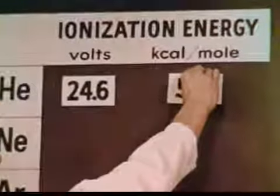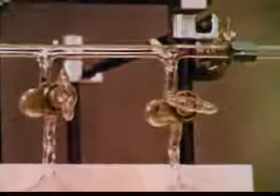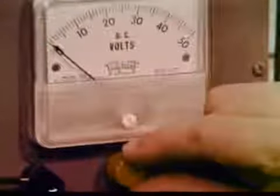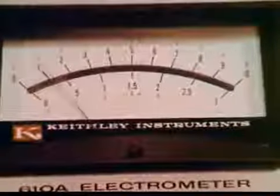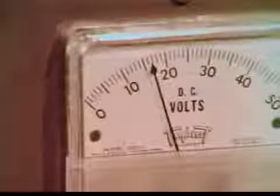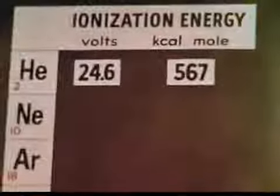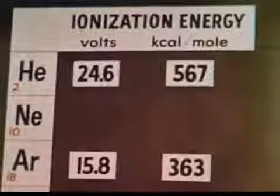The accepted value of 24.6 volts gives an ionization energy of 567 kilocalories per mole for helium. Now let's take the next gas, argon. The helium has been pumped out of the cell and argon added. Ionization begins at a reading of about 16.5 volts. The accepted value is 15.8 volts, which corresponds to 363 kilocalories per mole.